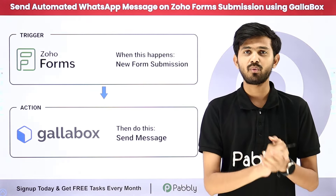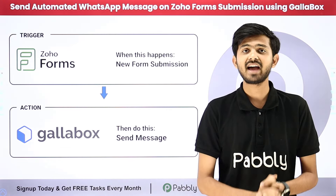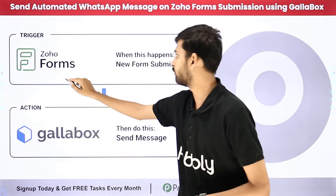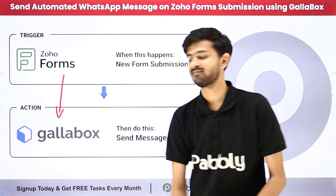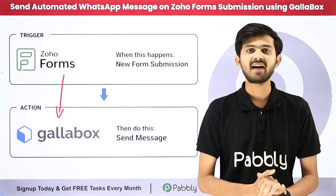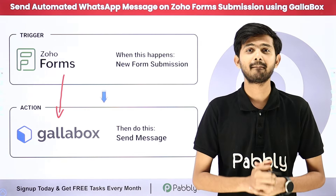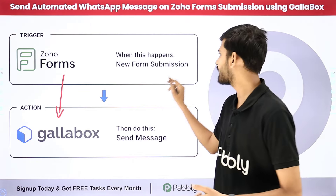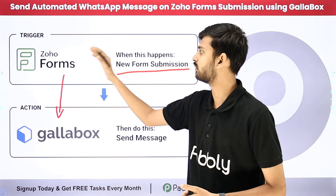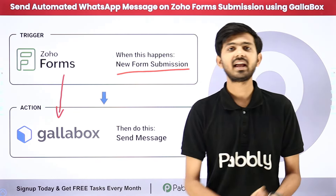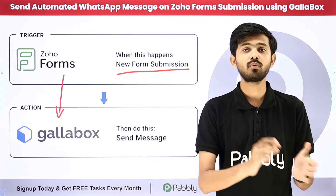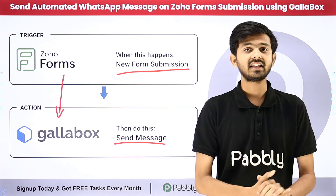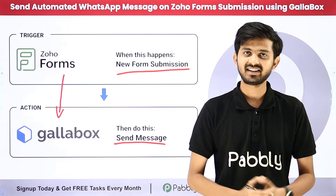For sending the message on WhatsApp I'm using Gallup Box, and for my objective I need to build a connection between Zoho Forms and Gallup Box. To build this connection I'm going to use Pabbly Connect, which is an amazing software for automation and integration. With Pabbly Connect, as I receive a new form submission from Zoho Forms, a message will automatically be sent on WhatsApp using Gallup Box.